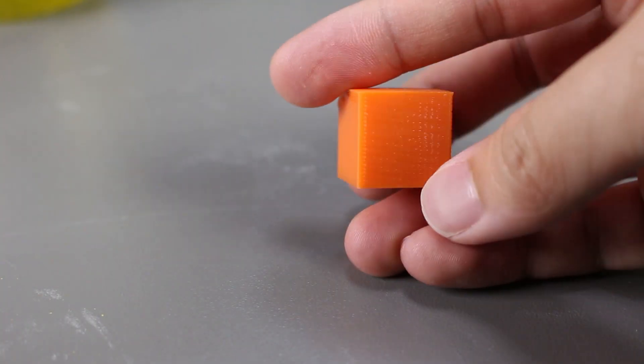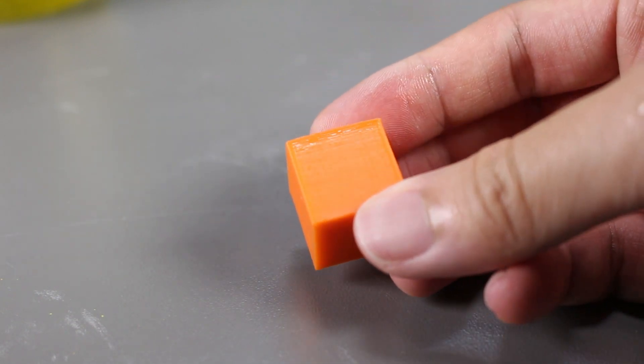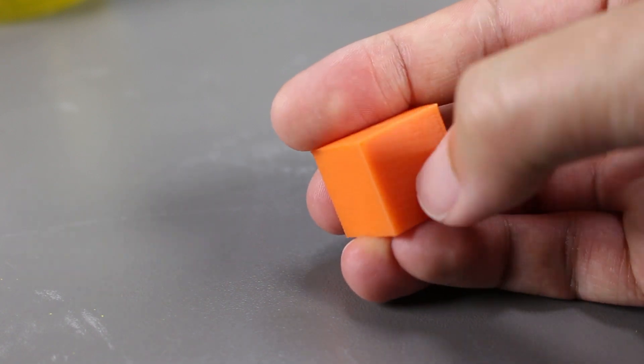I can still see the layers and feel them. I don't see any surface finish or difference at all. Maybe we diluted the acid too much.